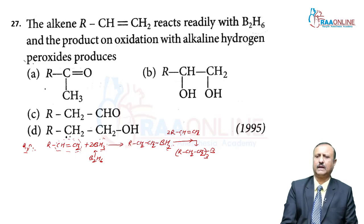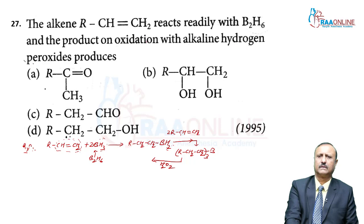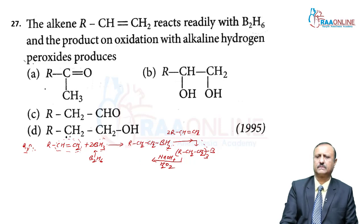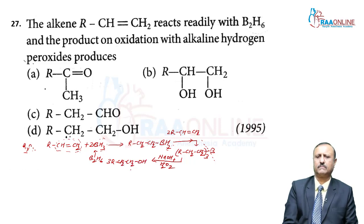The trialkylborane, when hydrolyzed by alkaline hydrogen peroxide (H₂O₂/NaOH), undergoes oxidation. The boron atom is broken off by hydrogen peroxide, giving H₃BO₃ (orthoboric acid) plus RCH₂–CH₂–OH. So the main product is RCH₂CH₂OH, which is a primary alcohol.